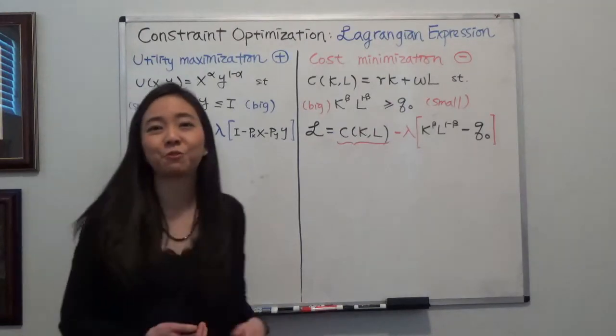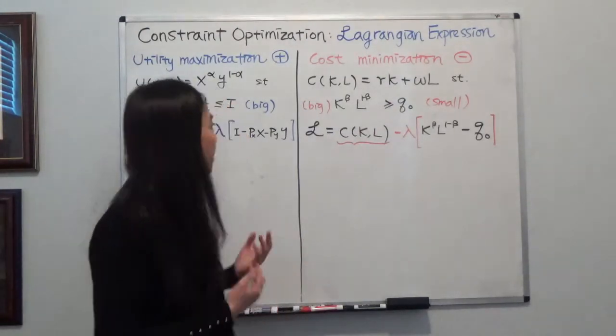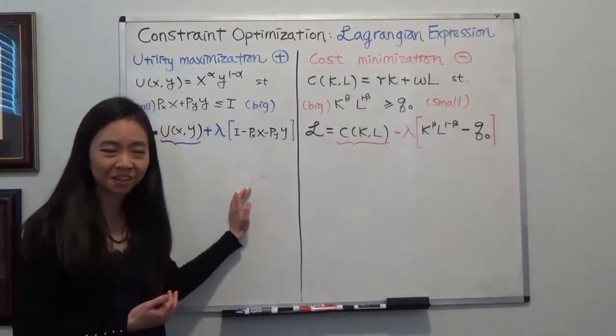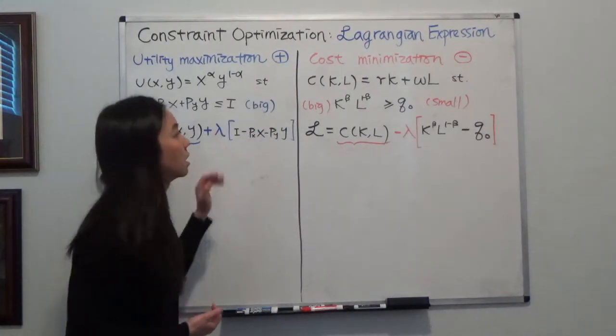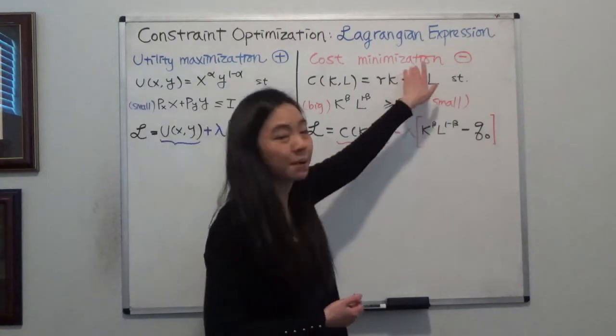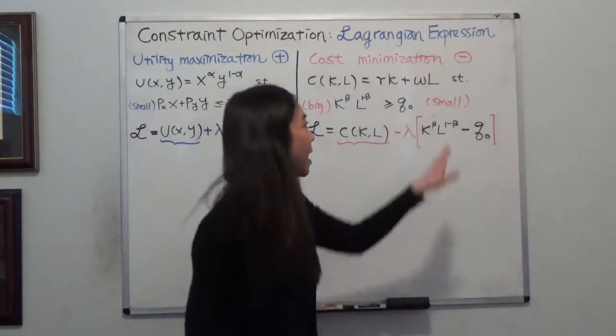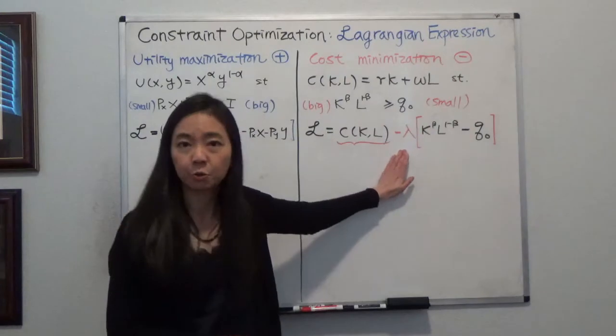So here I'm going to give you a bottom line. When you're trying to maximize something, you put a plus sign in front of your Lagrangian multiplier. If you're doing minimization, then you put a minus sign in front of your Lagrangian multiplier.